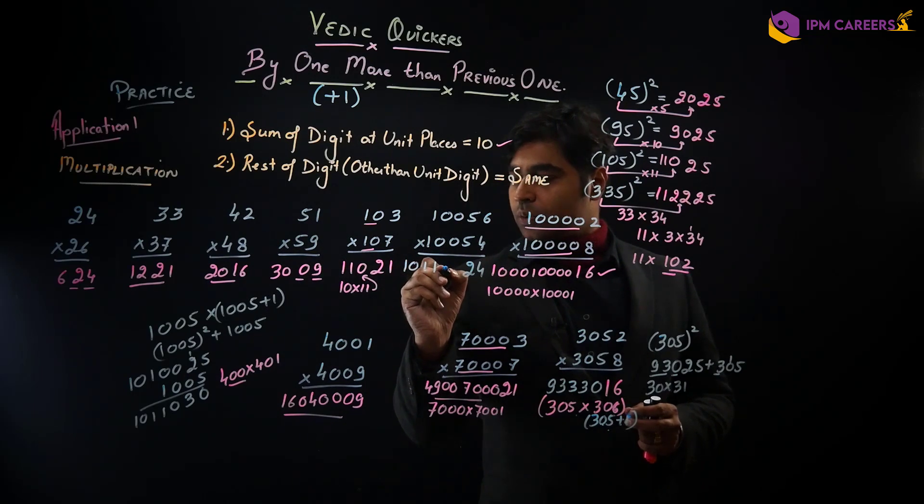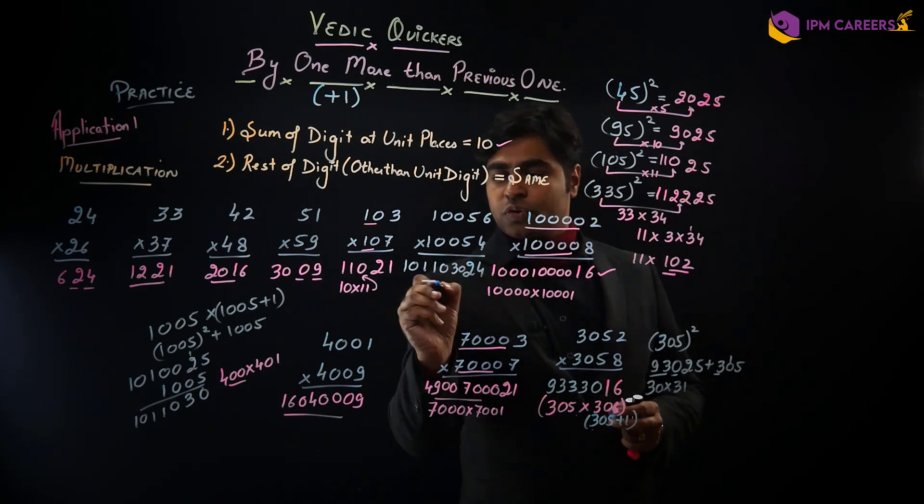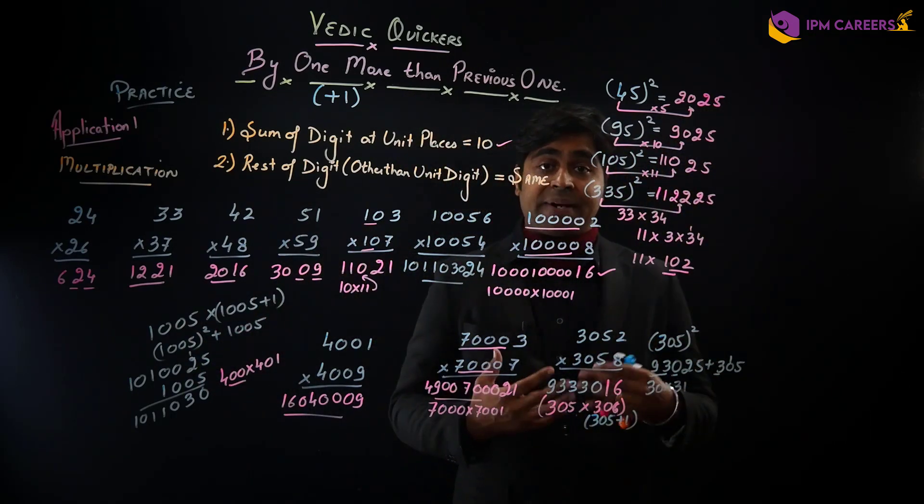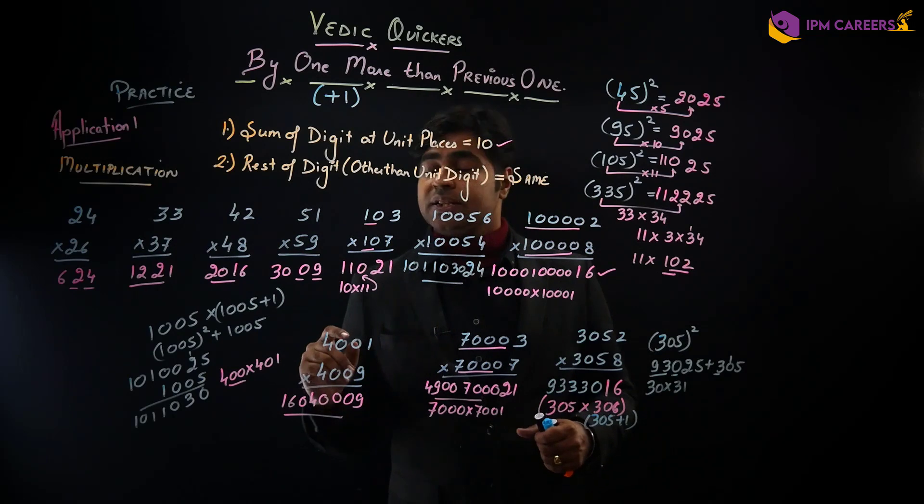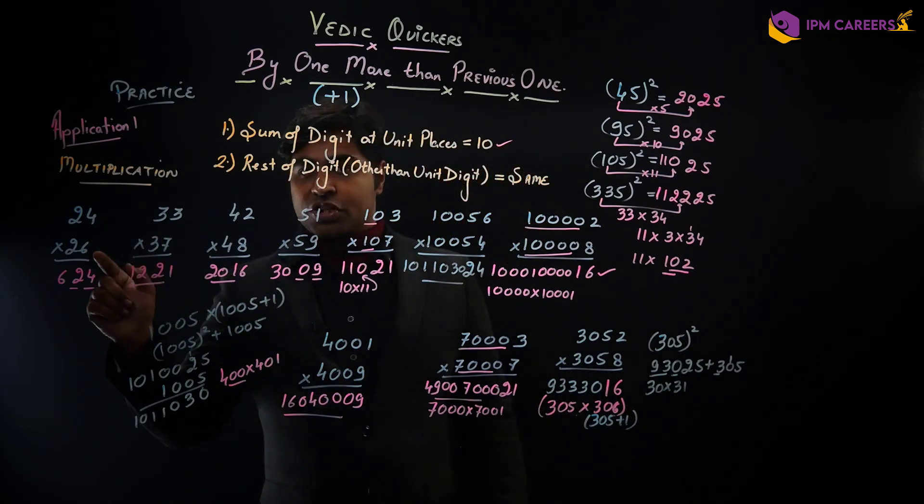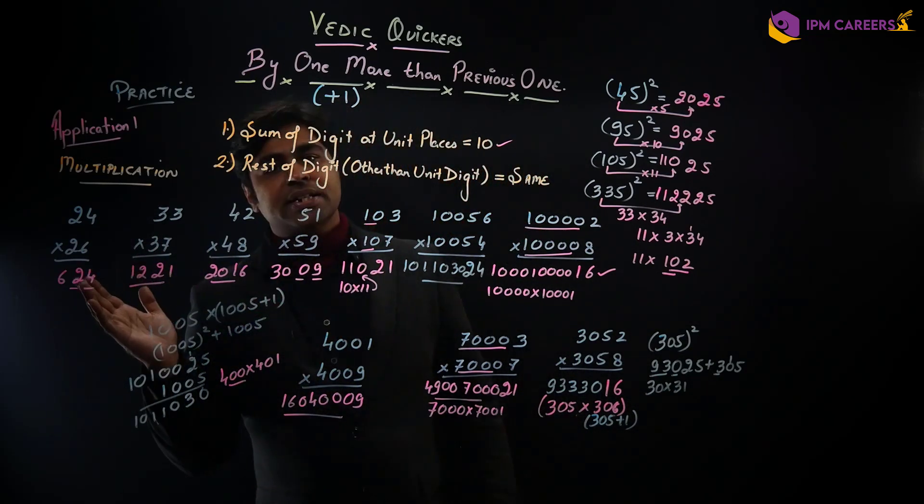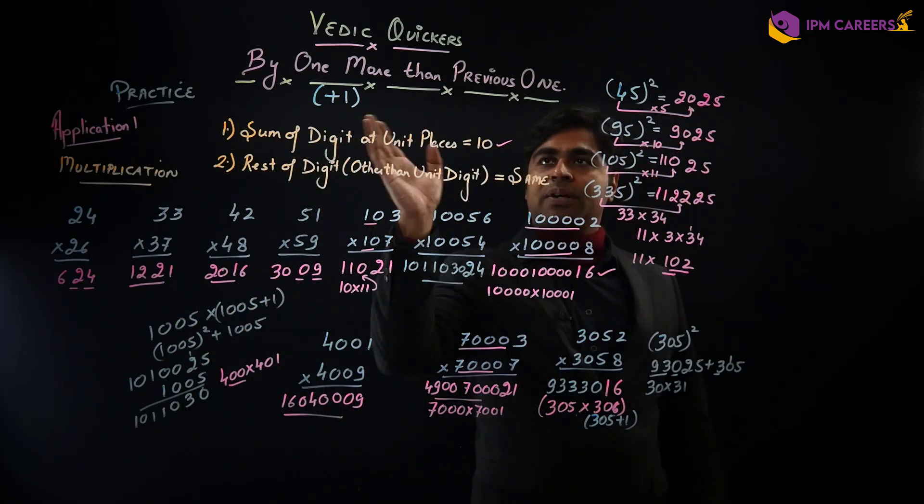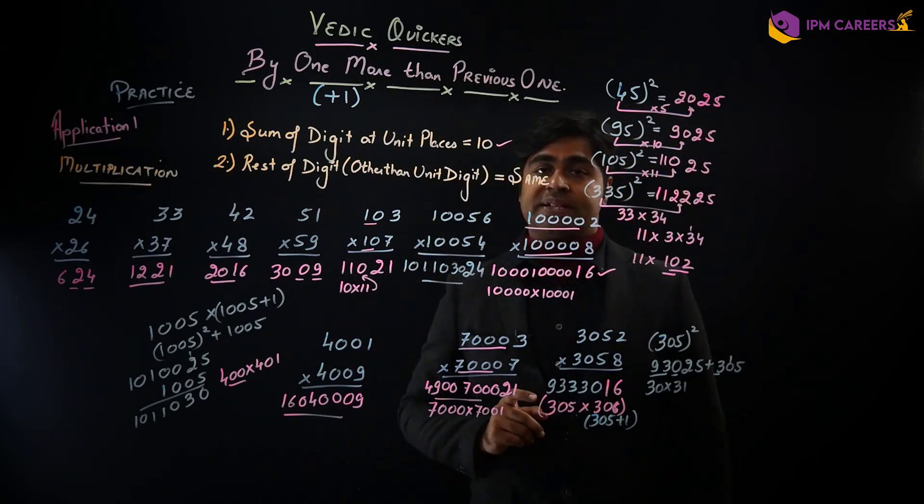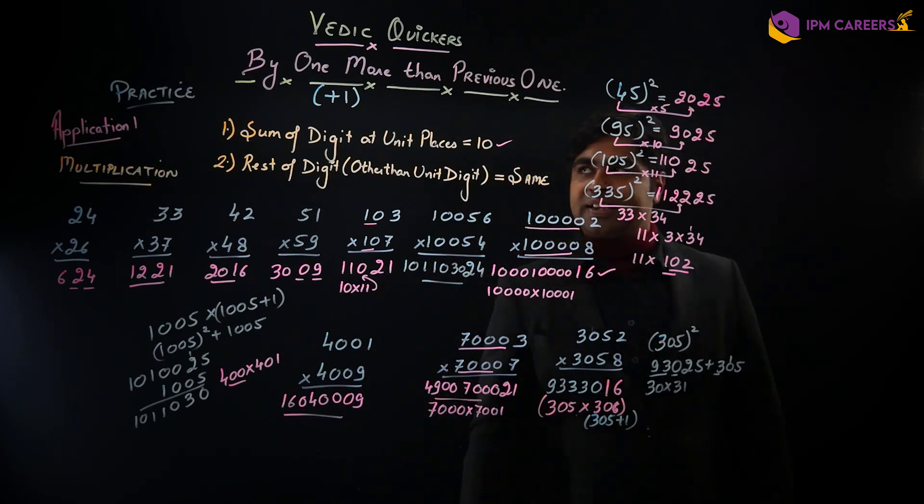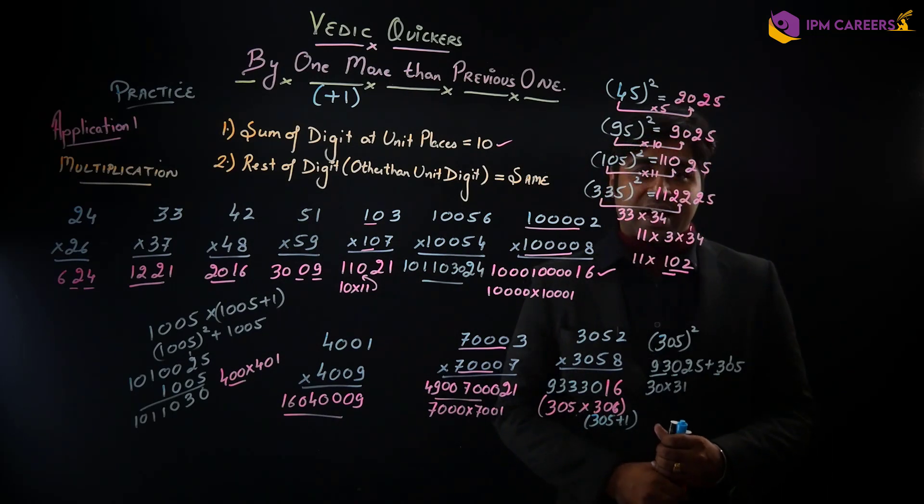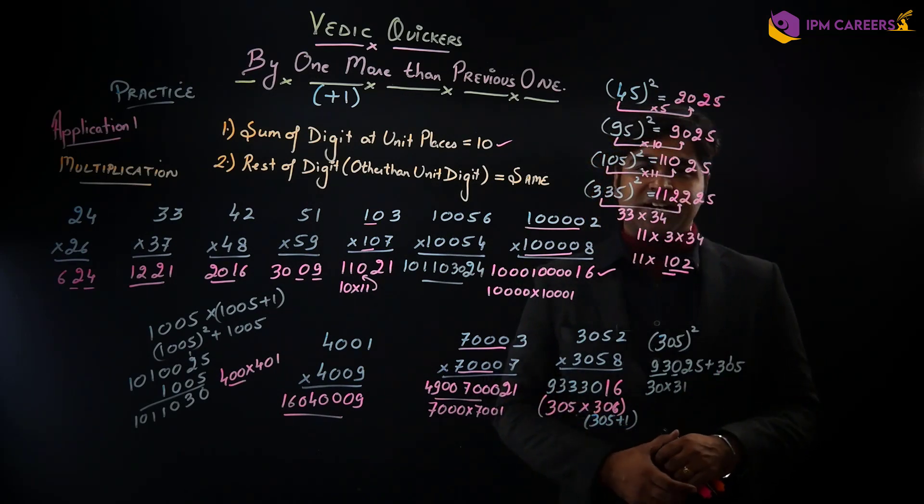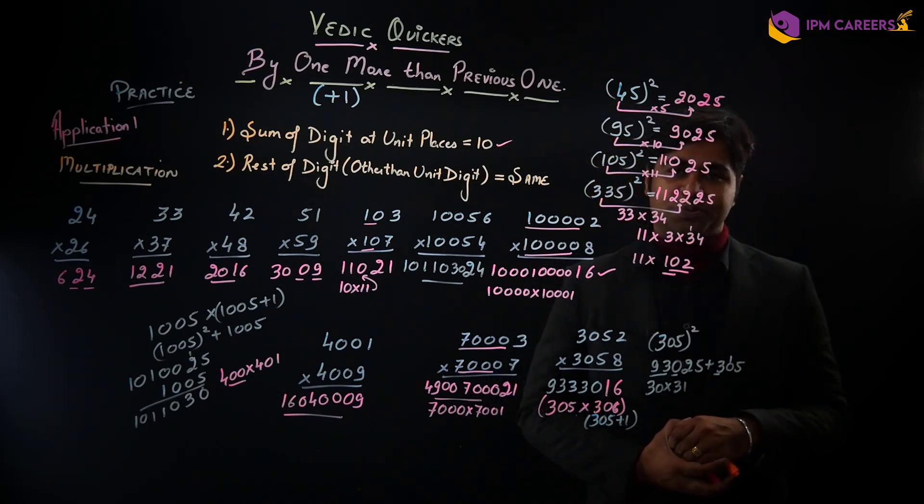So this was the first application and the application was the multiplication of the numbers which are ending with the summation of 10 and the rest of the rules are same. Thik hai, so meet me in the next video when we use this rule by one more than the previous one, we use subtraction and discuss this rule. So that would be all regarding the first application. Pehla method isse aap apni calculations bahut strong kar sakte ho. So meet me in our next video guys, there are more such interesting things. Thank you, thank you, thank you.